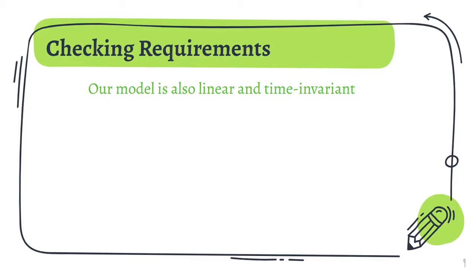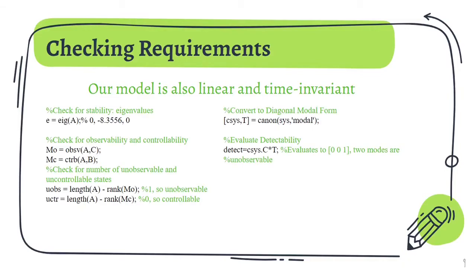If we had modeled the dynamics of a bicycle in its entirety, which includes starting from zero and acceleration and then later deceleration, our system would fail. However, we are using only the average velocity, which is a constant. As a result, we have made our system time-invariant. Our system is marginally stable as the eigenvalues return two zeros and a negative value. The state-space model is controllable since it is equal to zero, but it is not observable since it is equal to one. So we have to convert it into its diagonal modal form to check for how many states are unobservable.